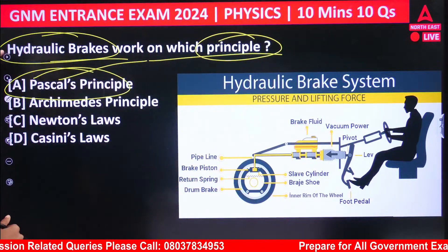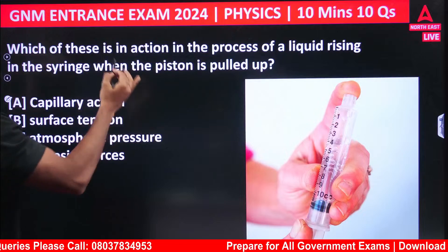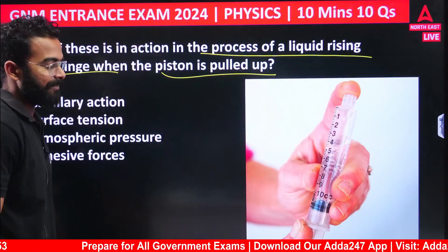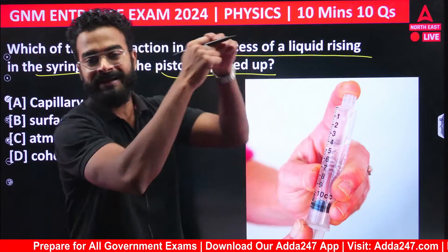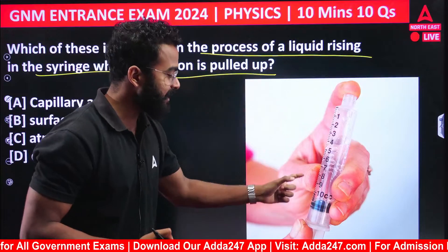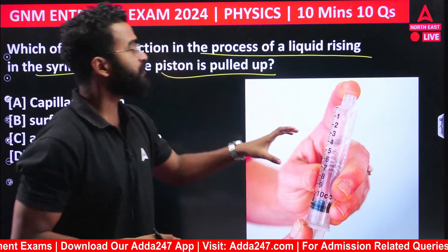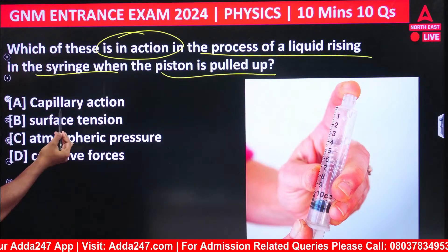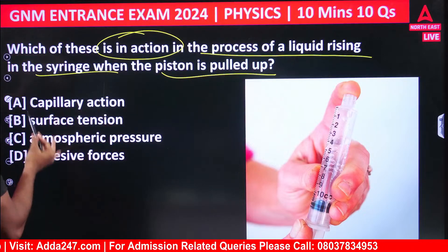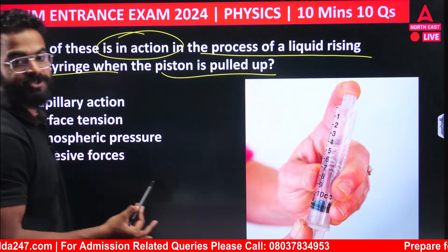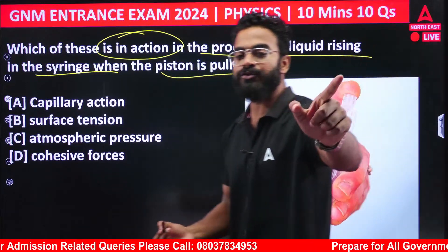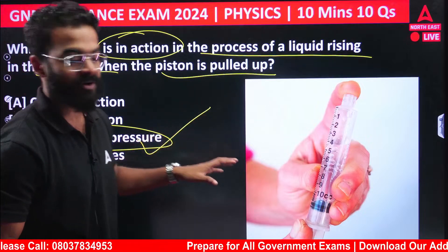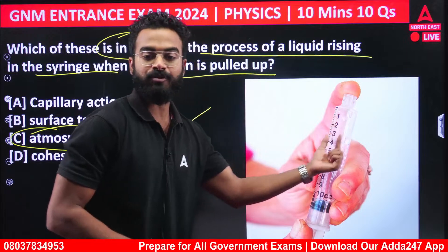Next question: which of the following is in action in the process of a liquid rising in a syringe when the piston is pulled up? The options are: capillary action, surface tension, atmospheric pressure, or cohesive forces. The correct answer is atmospheric pressure.